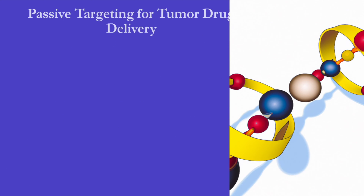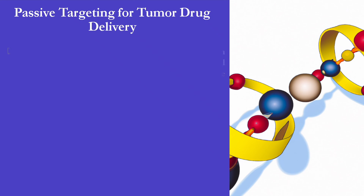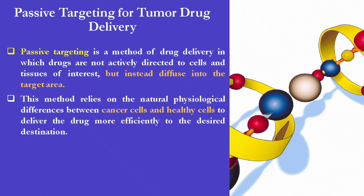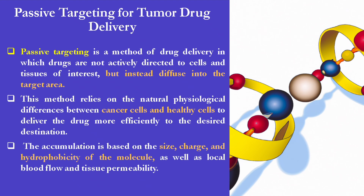In addition to active targeting, there is another one called passive targeting for tumor drug delivery. Passive targeting is a method of drug delivery in which drugs are not actively directed to cells and tissues of interest, but instead diffuse into the target area. This method relies on the natural physiological differences between cancer cells and healthy cells to deliver the drug more efficiently to the desired destination. The accumulation is based on the size, charge, and hydrophobicity of the molecule, as well as local blood flow and tissue permeability.